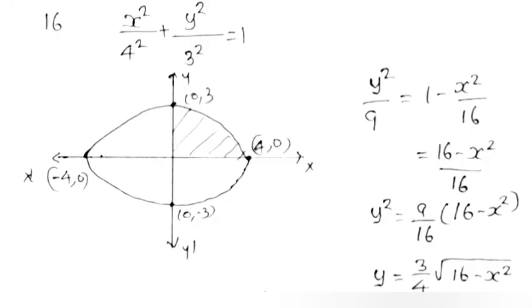Problem 16. Find the area of the region bounded by the ellipse x²/16 + y²/9 = 1 using integration. This can be written as x²/4² + y²/3² = 1. From the equation: y² = (9/16)(16 − x²), so y = (3/4)√(16 − x²).